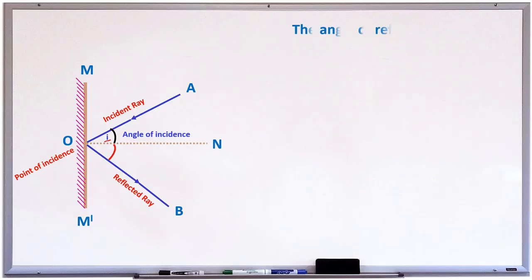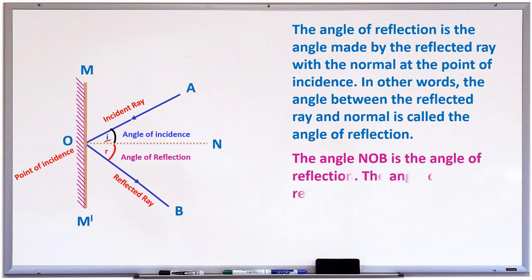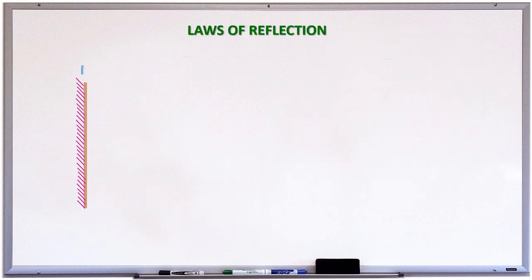The angle of reflection is the angle made by the reflected ray with the normal at the point of incidence. In other words, the angle between the reflected ray and the normal is called the angle of reflection. Here, angle N-O-B is the angle of reflection and it is denoted by the letter R.